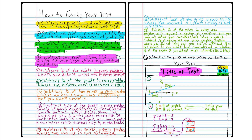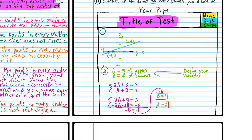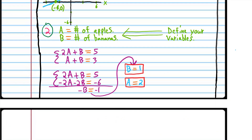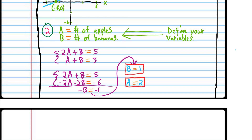There are going to be word problems on this test that require systems of equations. Every time you do a word problem that requires a system of equations, I want you to define your variables — for example, A equals number of apples and B equals number of bananas. You can't just write variables without telling the reader what they represent in word problems. If you don't show what each variable represents, I'm going to have you subtract one-fourth of the points for each one of those problems.